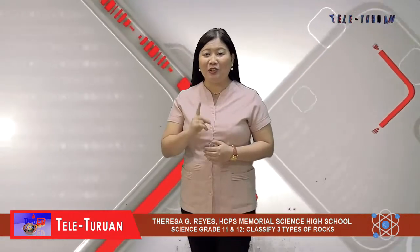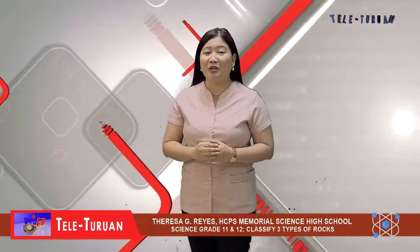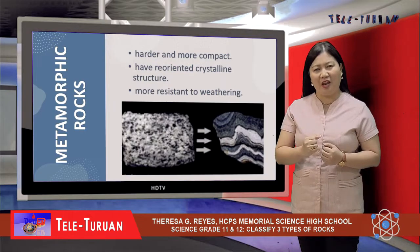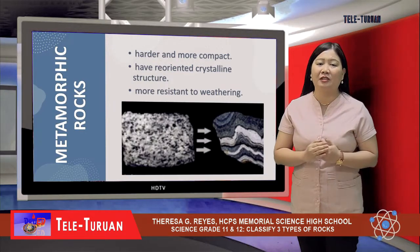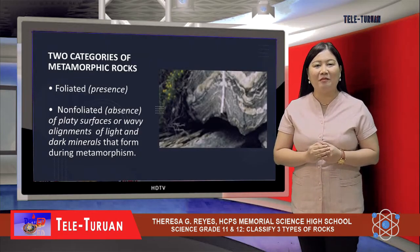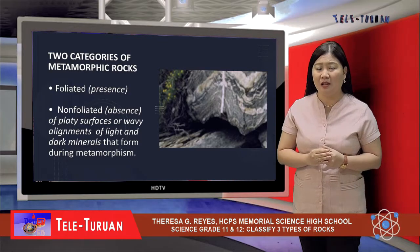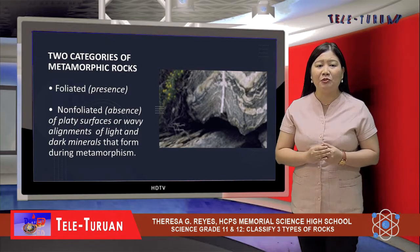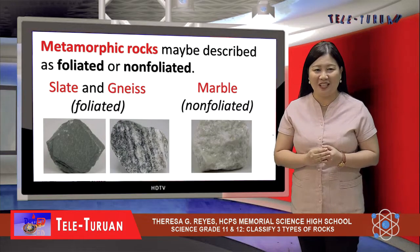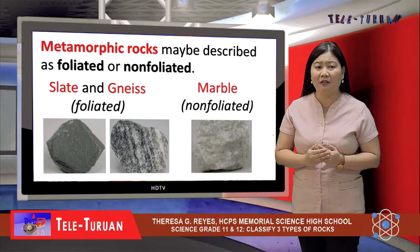The third type of rock is metamorphic rock. How do metamorphic rocks differ from original rocks? Compared with the original rocks, the resulting metamorphic rocks are typically harder and more compact, have reoriented crystalline structure, and are more resistant to weathering. There are two major categories of metamorphic rocks based on the presence or absence of flat surfaces or wavy alignments of light and dark minerals that form during metamorphosis. Metamorphic rocks may be described as foliated or non-foliated. For example, slate and gneiss are foliated, whereas marble is a non-foliated metamorphic rock.